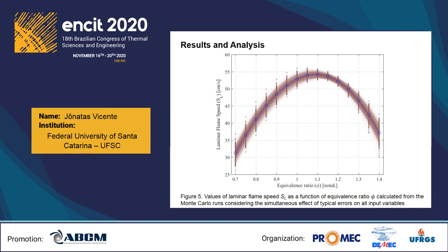The behavior illustrated in the figure can be better explored as the effects of each individual variable are sorted out. The figure presents the values calculated considering the individual effects of the errors in temperature. The errors in laminar flame speed caused by errors in temperature have a minimum at equivalence ratio 1.27, as a result of the combined effects of temperature and equivalence ratio on laminar flame speed.